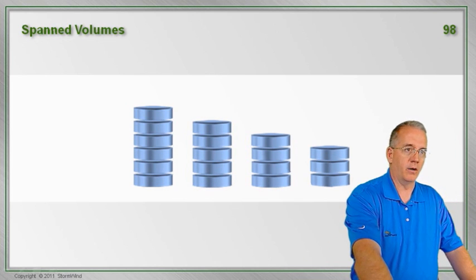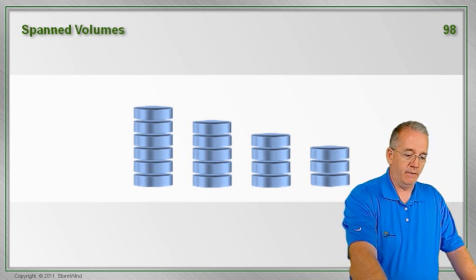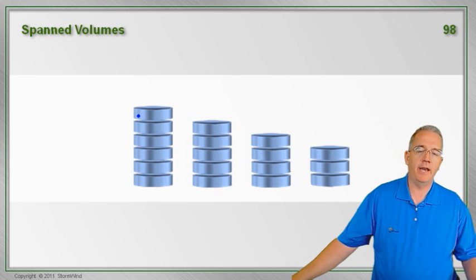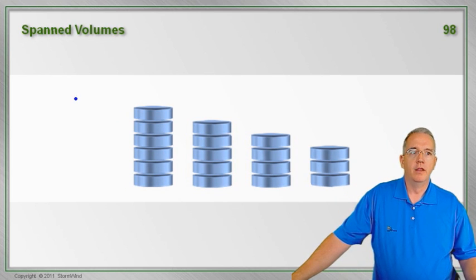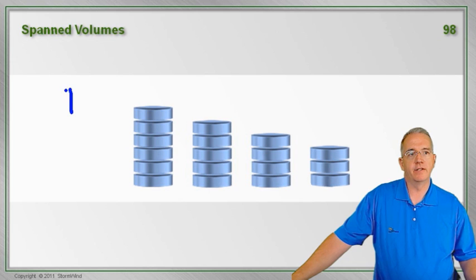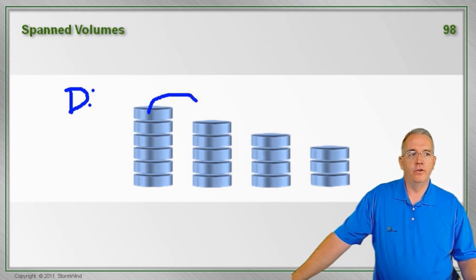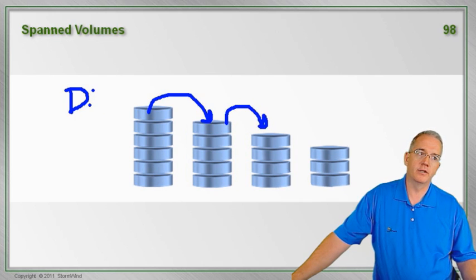It doesn't provide you with any fault tolerance or any advantage in speed. Instead, it just makes the drive bigger. So this will all appear to be, for example, the D drive. And when this drive fills, it spills over to here. When this one fills, it spills over to here, so on and so on.